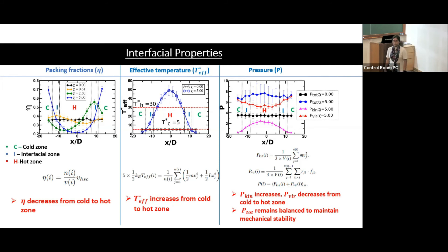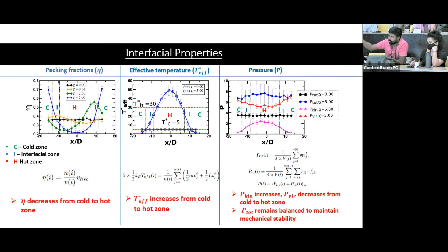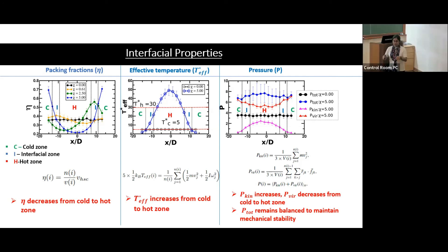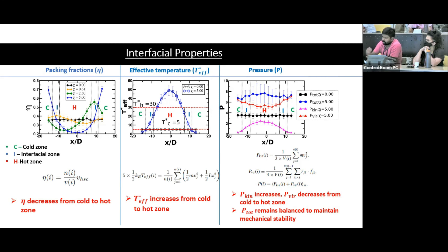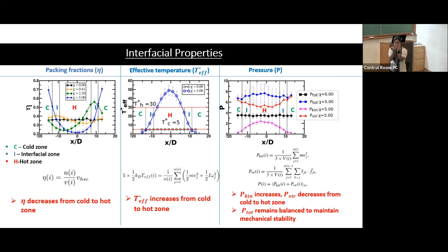Q: If instead of rod particles you used a mixture of spherical and rod particles, making the spherical ones hotter, what would you expect? A: In a mixture of rods and spheres there is already a depletion interaction effect. With temperature difference added, I expect the rod-like particles will tend to come closer to reduce excluded volume, and the spherical hot particles will try to increase entropy. Something similar to what we observe would likely occur, but not exactly the same behavior.